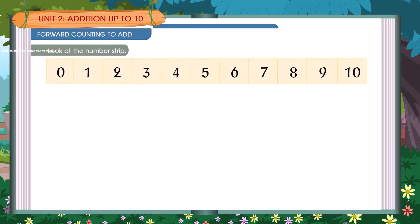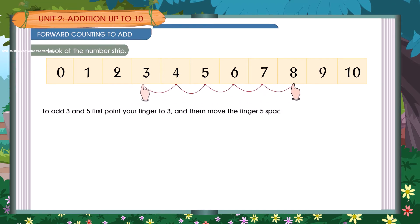Forward counting to add. Look at this number strip. To add 3 and 5, first point your finger to 3 and then move the finger 5 spaces forward. You will reach 8. So we can say 3 plus 5 is equal to 8.